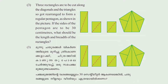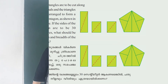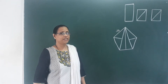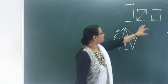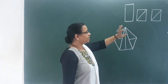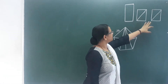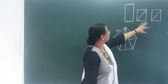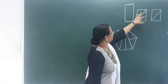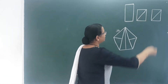The triangles are rearranged to form a regular pentagon as shown in the picture. If the sides of the pentagon are to be 30 centimeters, what should be the length and breadth of the rectangles? For the second rectangle: two rectangles — what do we call the diagonal?